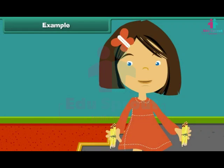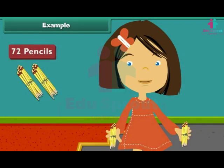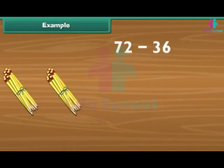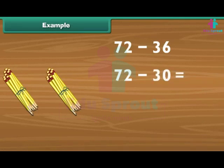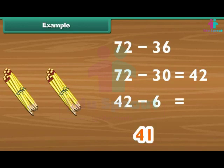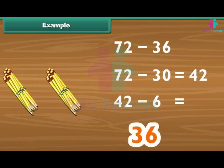Example: Reena's father bought her 72 pencils. She used up 36. How many are left? To find how many pencils are left, we subtract 36 from 72. First subtract 30 from 72 — the answer is 42. Now subtract 6 from 42 using reverse counting: 41, 40, 39, 38, 37, 36. So 36 is the answer.